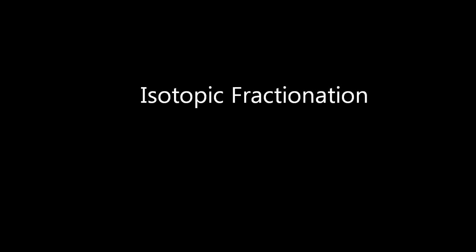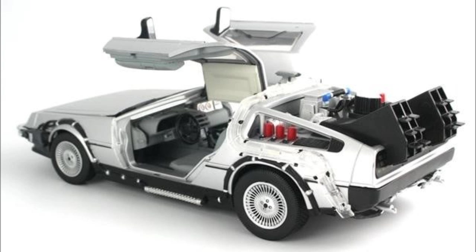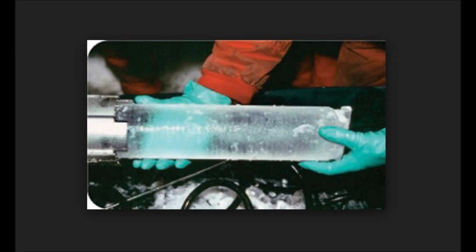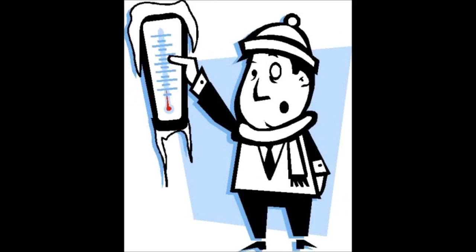Isotopic Fractionation. Climate has not always been recorded. Proxies are used by scientists to understand past climate because they cannot physically go back in time and observe what climate was like millions of years ago. One way of determining past climate is through isotopic fractionation, a very important climate proxy, as it can tell us what temperatures were like on average for a region.